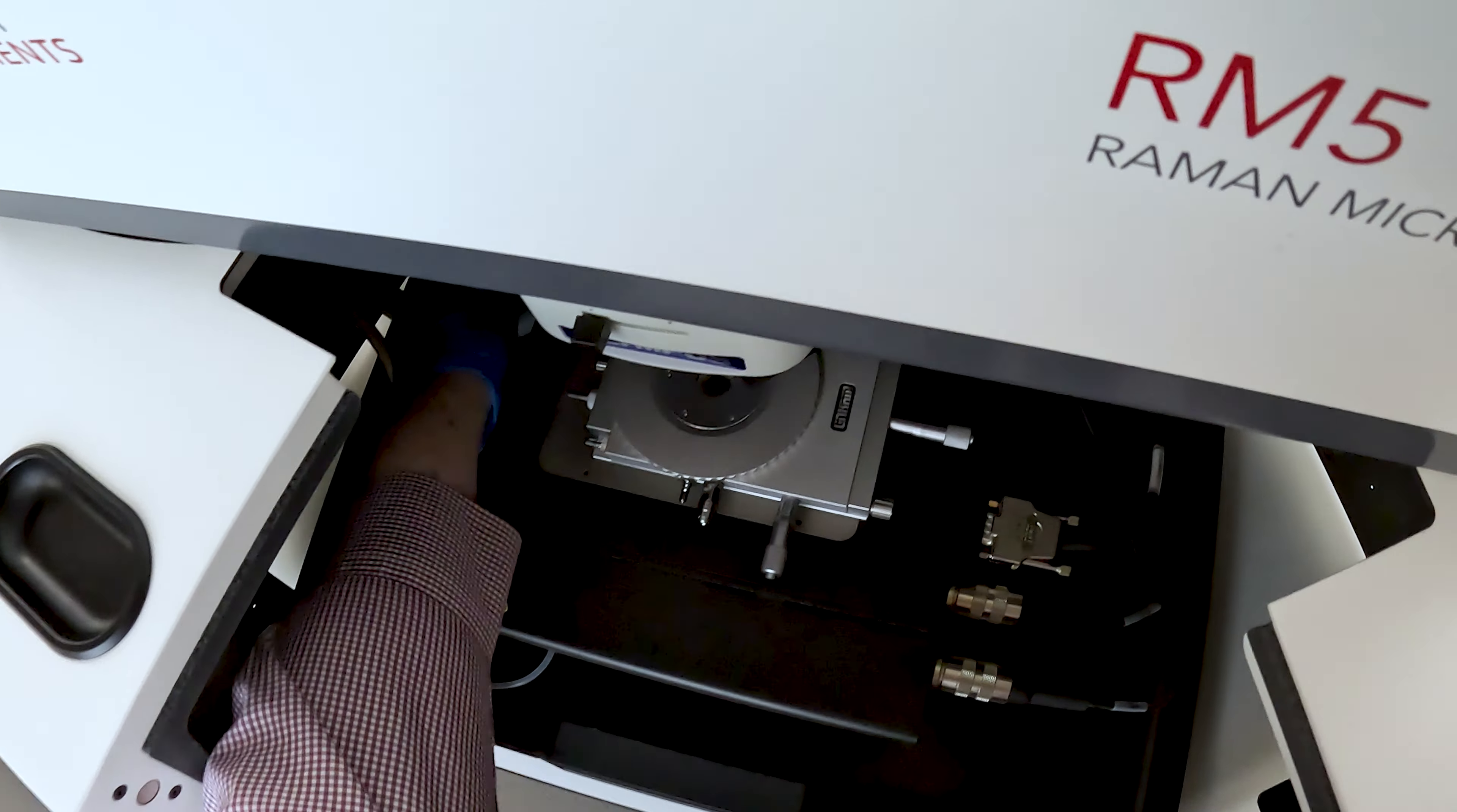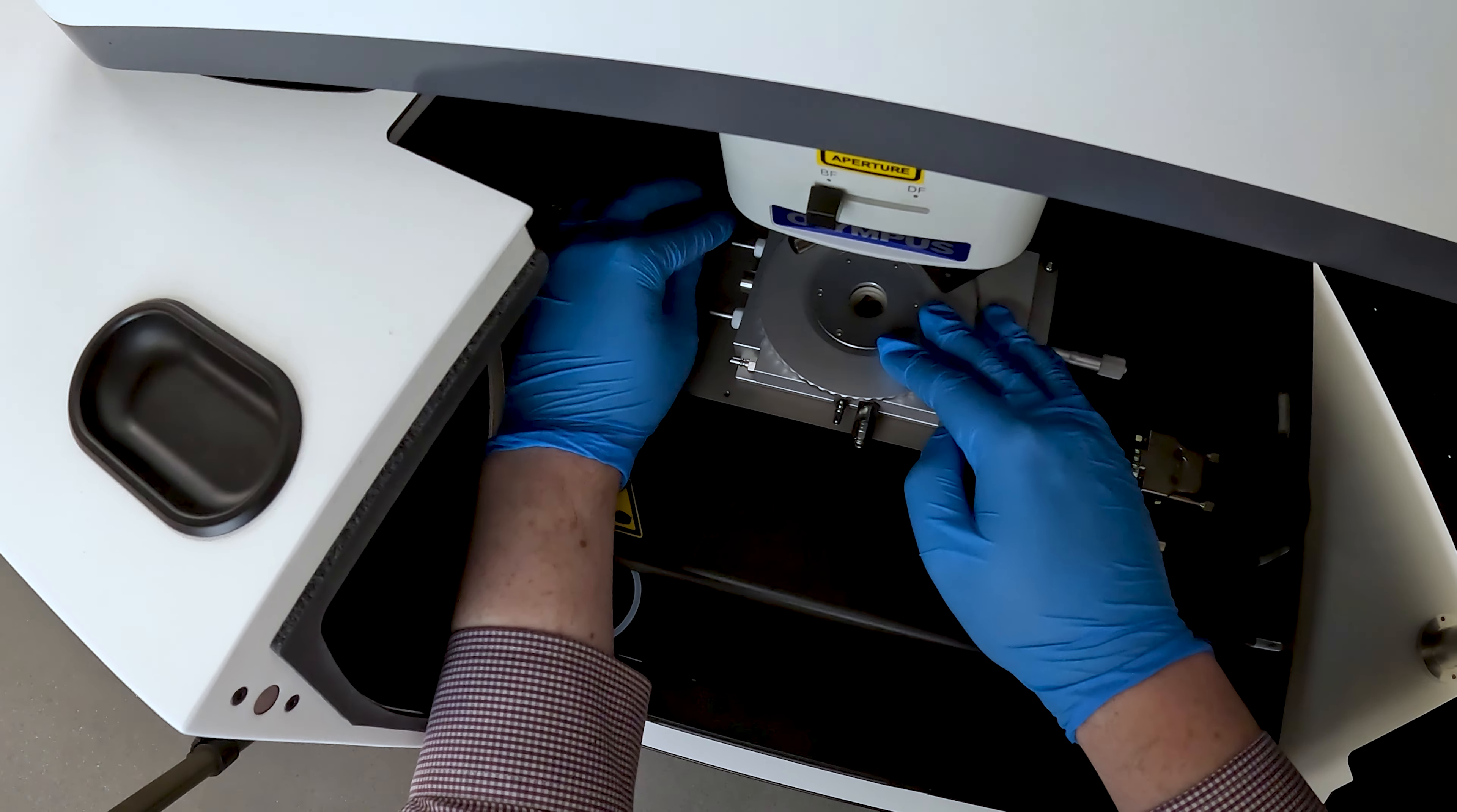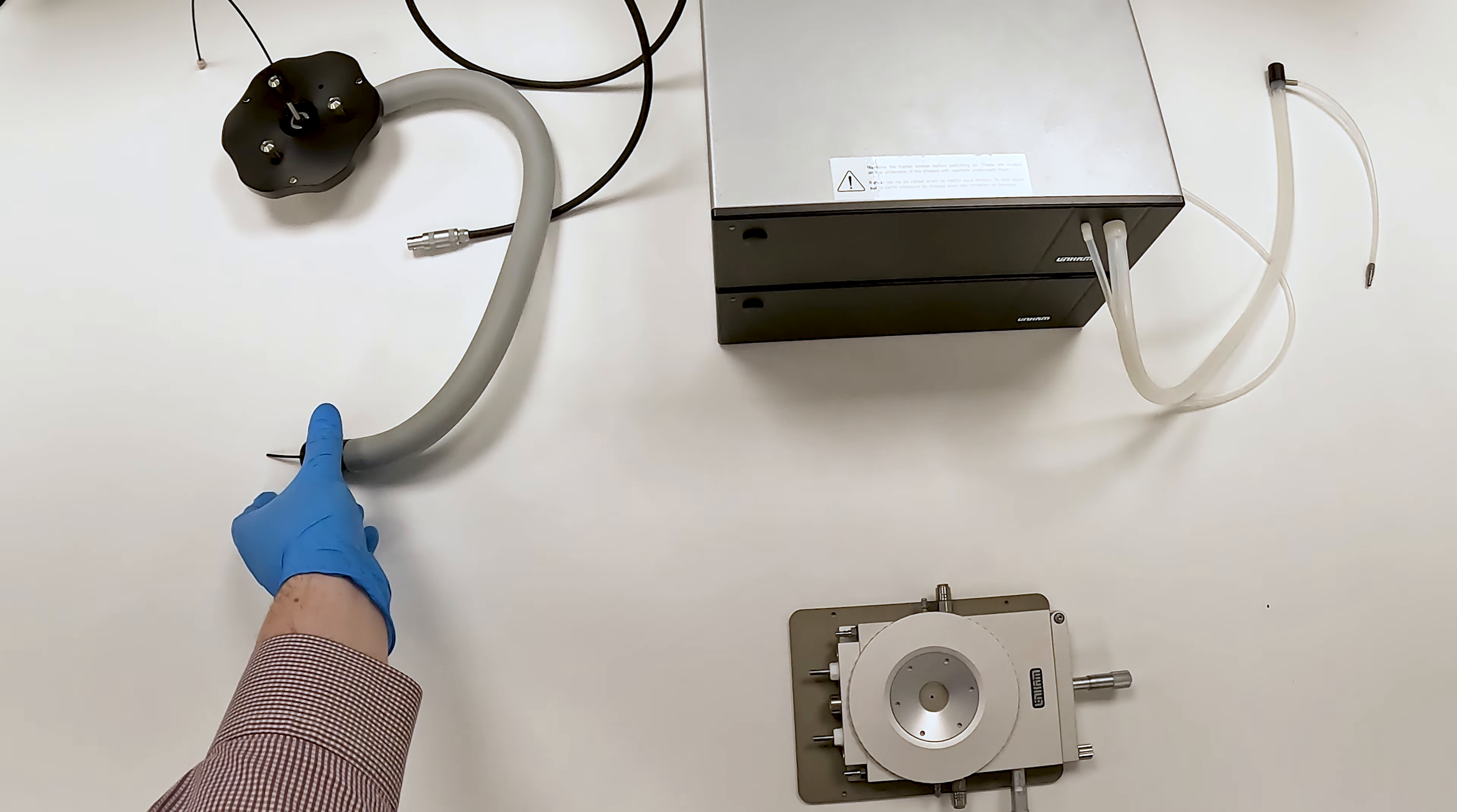For demonstration purposes, we will show you how each cable is connected to the Linkam stage outside the microscope. Remember, the following connections should all be done by feeding each tube and cable through the hole in the external doors of the RM5, when the Linkam stage is mounted underneath the microscope.